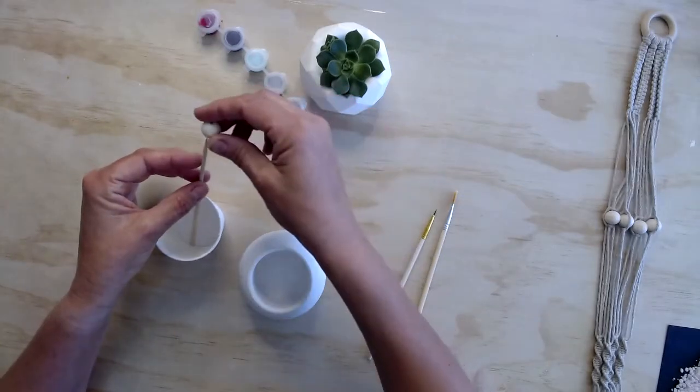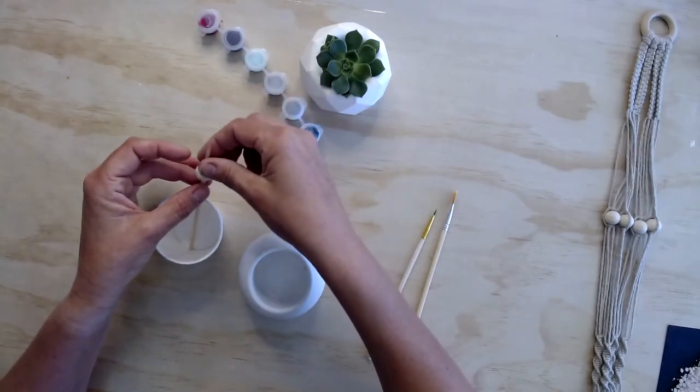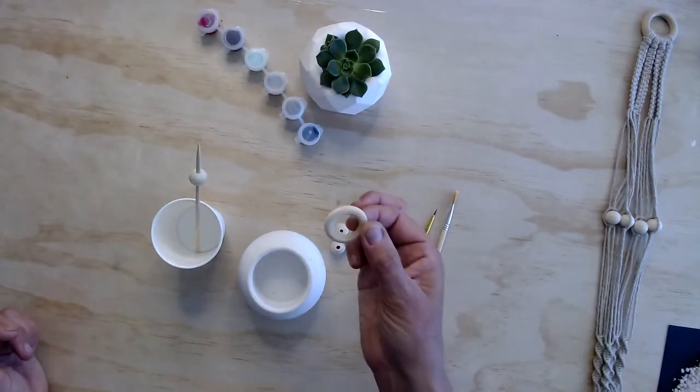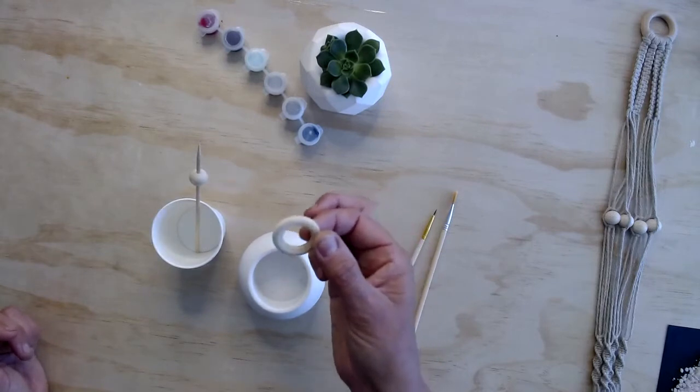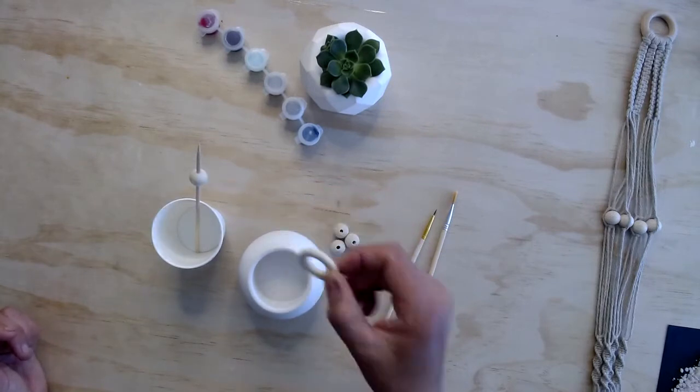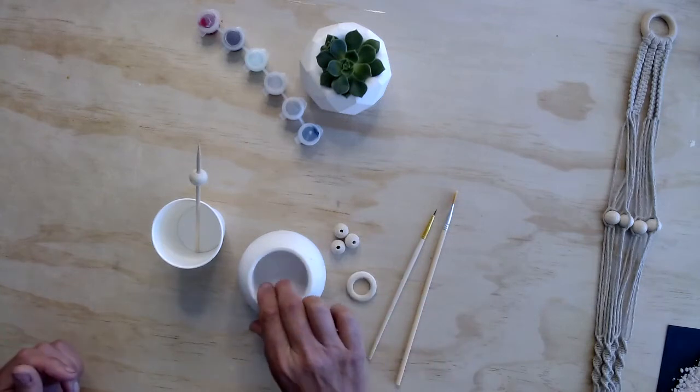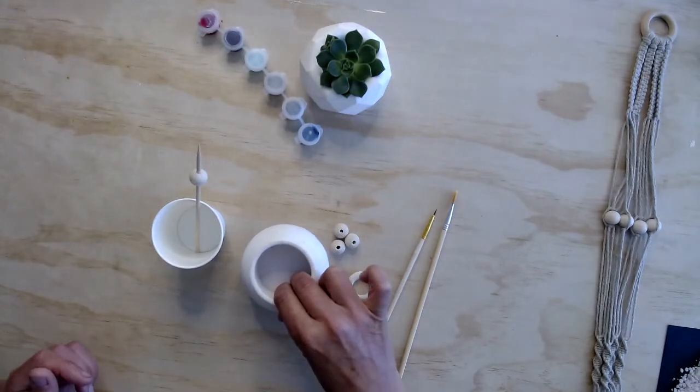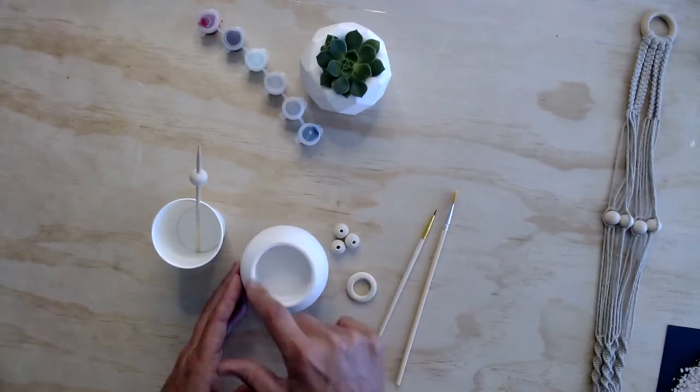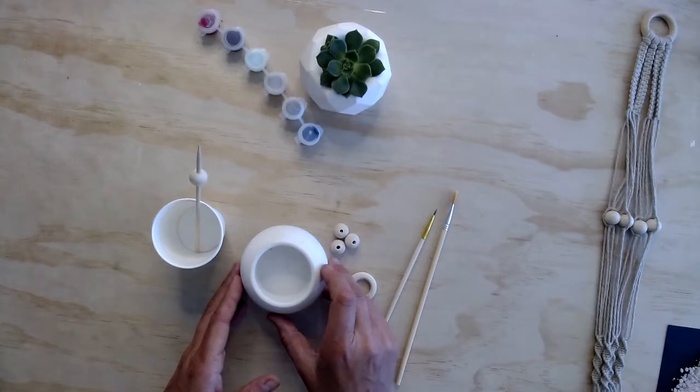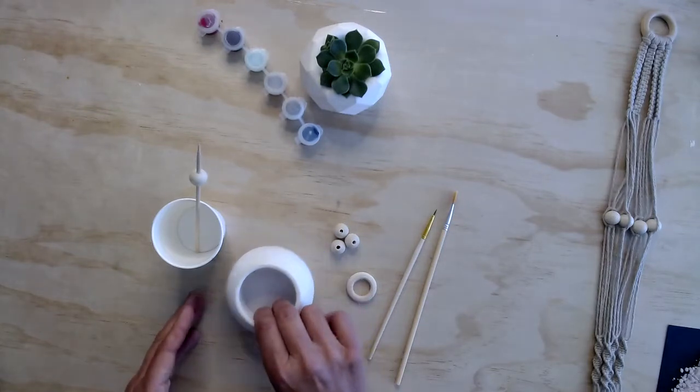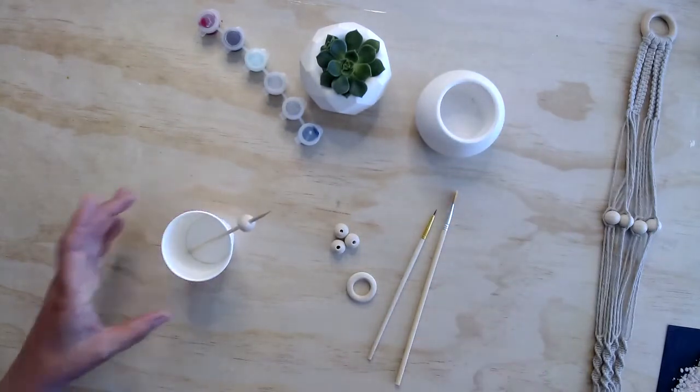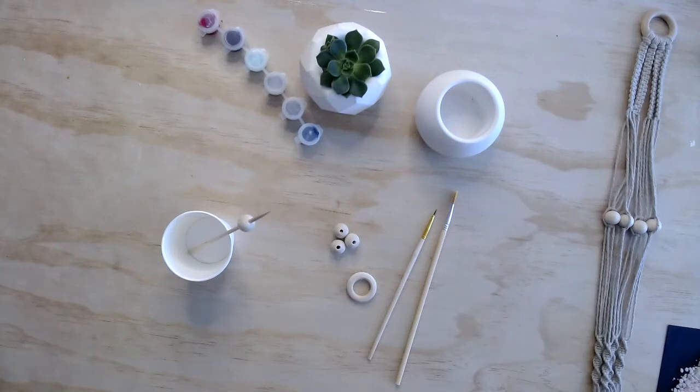We're going to start with putting a bead on our skewer. This is to help us paint it. Painting the ring is optional but today I'm going to paint this ring black, and you can also leave your bowl white if you prefer that. Just be sure to paint some sealant on the inside before planting your pot. So we'll start with painting the beads first. It helps to have a hairdryer handy to dry in between coats.